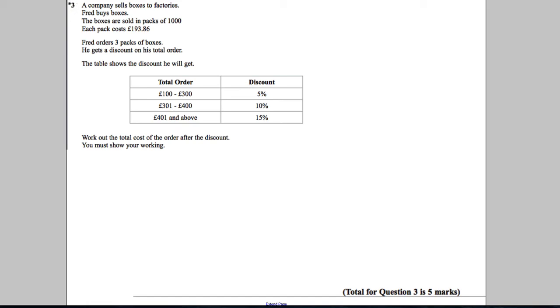Okay, in this question firstly we have a star which means the quality of the way we write our answer is going to be assessed. We're told that a company sells boxes to factories. Fred buys boxes. The boxes are sold in packs of a hundred, each pack costs £193.86. Fred orders three packs of boxes, he gets a discount on his total order. The table shows the discount he will get. Work out the total cost of the order after the discount. You must show your working.